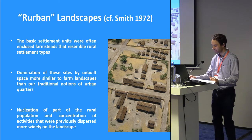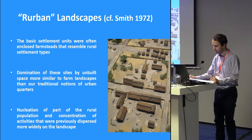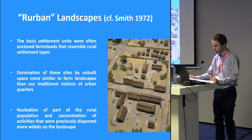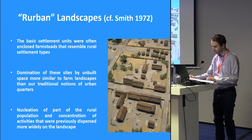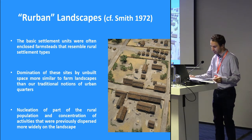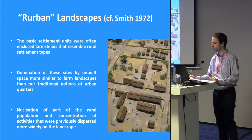A final feature of many late Iron Age centers is that the basic settlement units were often enclosed farms that resembled rural settlement types. The term 'third urban,' coined by Smith in 1972, encapsulates the idea of the domination of these sites by unbuilt space more similar to farm landscapes than our traditional notions of urban quarters. These groups of farms with their outbuildings indicate a transfer of rural settlement patterns to a more confined area — in other words, a kind of translocated landscape with clustered extended households that would occasionally also perform craft and commercial functions. This phenomenon is similar to the pattern already observed centuries earlier in the outer settlement of the Heunenburg, and suggests the nucleation of part of the rural population and a concentration of activities that were previously dispersed more widely in the landscape.